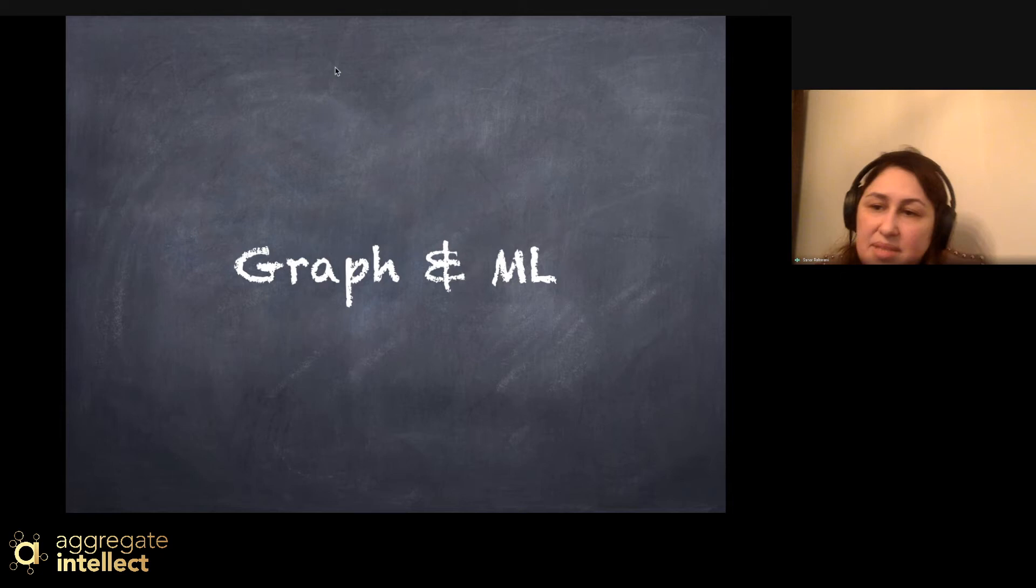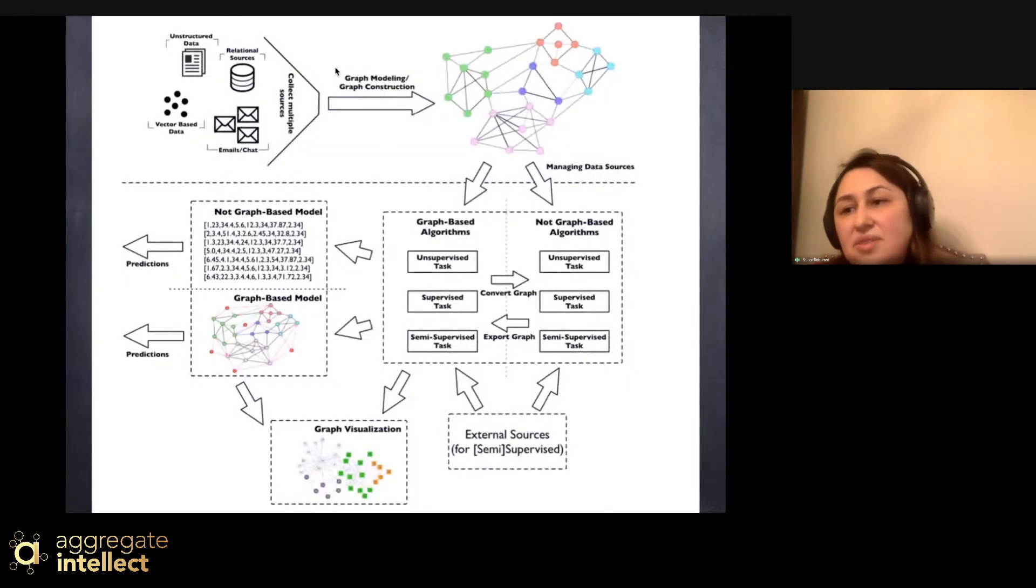Security, now a little bit about graph and machine learning. So graphs, the role of graph in machine learning workflow, it could be everywhere. It could be from data processing part to data modeling, result representation, feature selection.